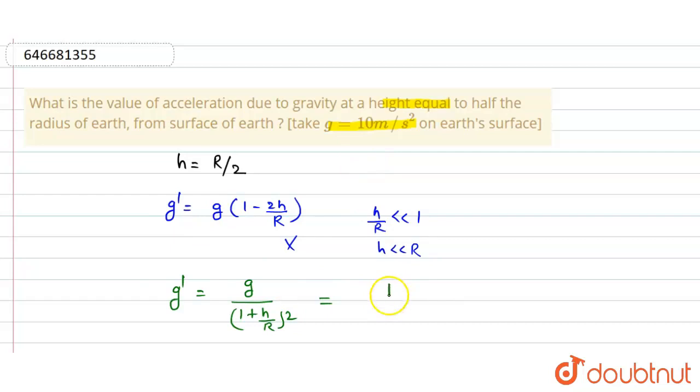So this is 10 divided by, and h by R can be written as h by R is equal to 1 by 2. So we put the value and this becomes 1 plus...